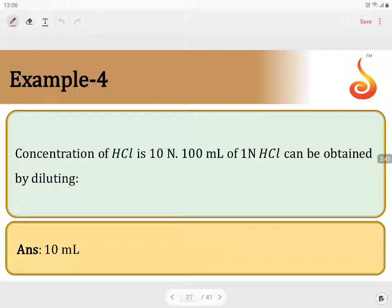So 10 plus 90 becomes 100. Volume of water added is 90 mL and volume of HCl is 10 mL. They are asking only the volume of HCl, which is 10 mL.